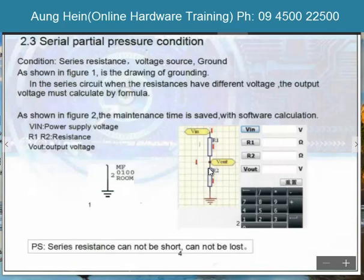R4 is a 3. R2, R1, R1 plus R2 into VN. R2, R1 plus R2 into VN. R2 by R1 plus R2 into VN.